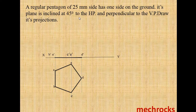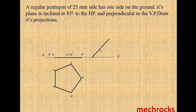But they have given that the plane is inclined at 45 degrees to the horizontal plane. Here we took it as 0 degrees, that is parallel to the horizontal plane. Now we have to rotate this plane to 45 degrees. You draw a 45 degrees side — this angle is equal to 45 degrees. The length of this plane is equal to this one. You take care of A dash, B dash, because they give one side on the horizontal plane, that's why I am taking this as A dash, B dash.